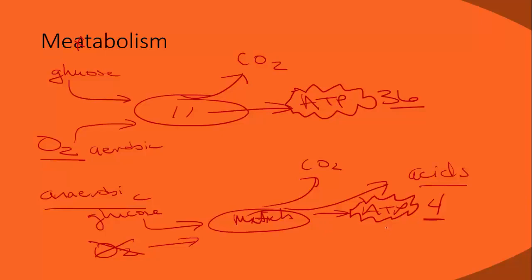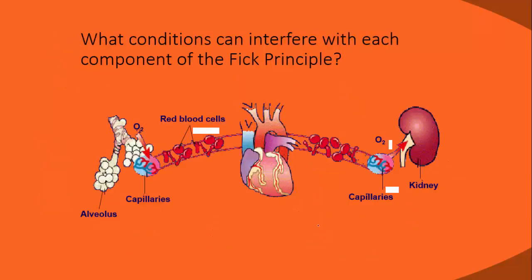To fix anaerobic metabolism, supply oxygen. For that oxygen to reach tissue and enter the mitochondria, all Fick principles must be functioning along the entire delivery process.